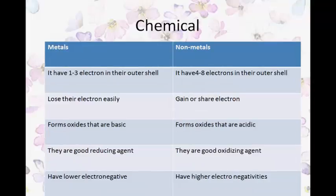Regarding the chemical properties of metals and non-metals: metals have 1 to 3 electrons in their outermost shell, whereas non-metals have 4 to 8 electrons. Metals can lose electrons easily, but non-metals can gain and share electrons. Metals form oxides that are basic in nature, while non-metals form oxides that are acidic in nature. Metals are good reducing agents, whereas non-metals are good oxidizing agents. Metals also have lower electronegativity, whereas non-metals have higher electronegativity.